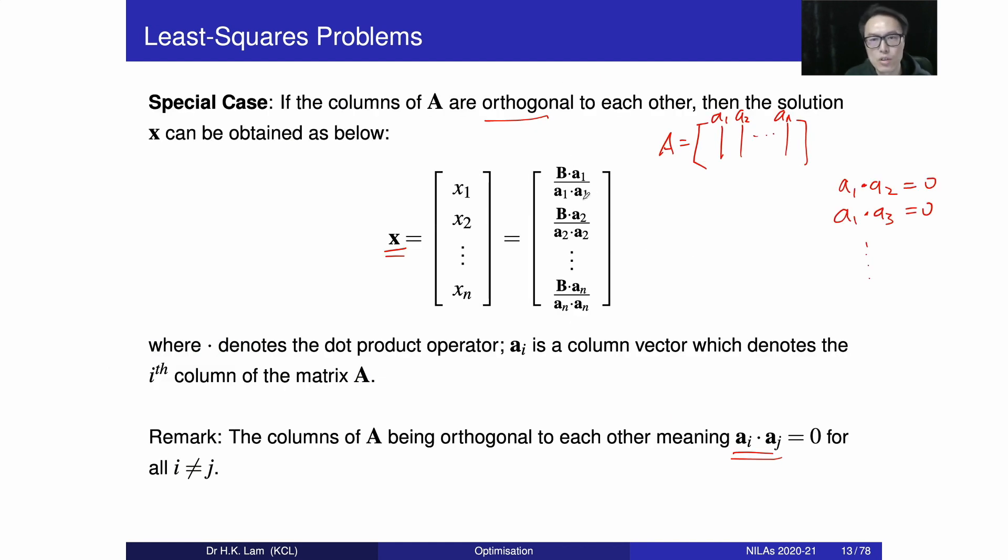So we are going to use this one. B is a constant. A1 is the first column of A, and then this is the dot product. Just to remind that, when we talk about the dot product, for example A1 is 1 and 2. So A1 dot A1 means that this is 1 times 1 plus 2 times 2, 1 times 1 plus 2 times 2. So that is the dot product. In this case, this is the value of x1, this is the value of x2 up to xn.